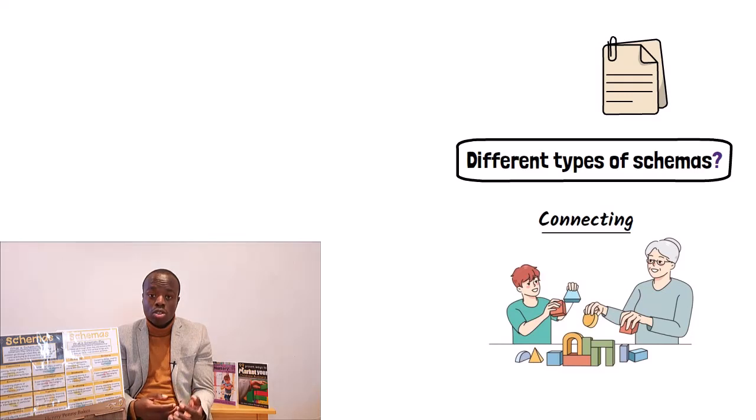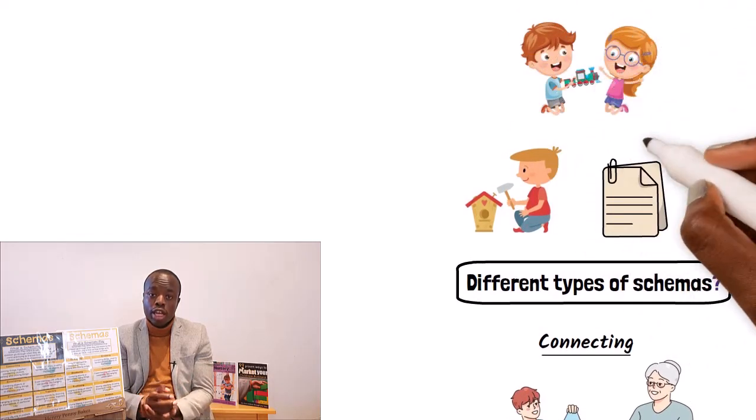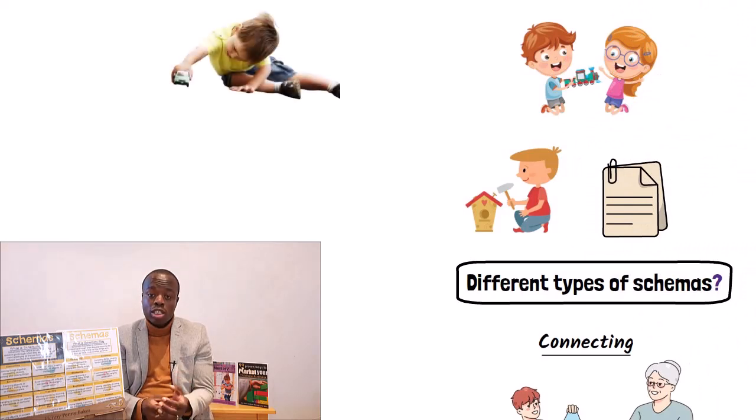You might find that a child enjoys doing work at like a workbench where they can hammer nails and wood connecting pieces together. Having resources at your home or your childcare provision like train tracks will greatly support this. Children displaying this schema will enjoy taking things apart and putting things back together, though they might not be as good at the latter part of that.